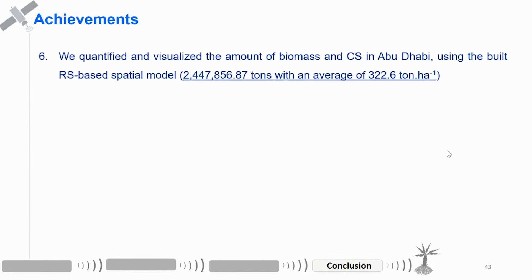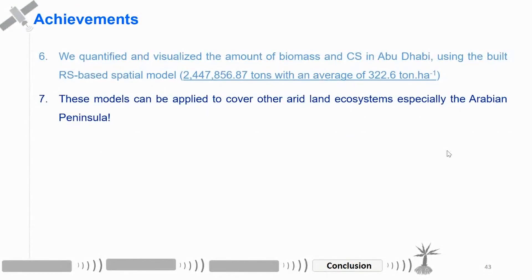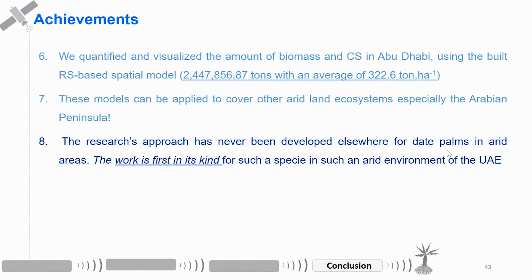Fifth, we built a remote sensing GIS-based model to calculate the carbon stock at different age stages. Seventh, we quantified and visualized the amount of biomass and carbon stock in Abu Dhabi using the built remote sensing spatial model. This model can be easily applied to other areas in arid land ecosystems, such as GCC countries or the Arabian Peninsula, because they have a similar environment. This research approach has never been developed elsewhere for date palm, and this work is the first of its kind for such a species in such an arid environment in the UAE.